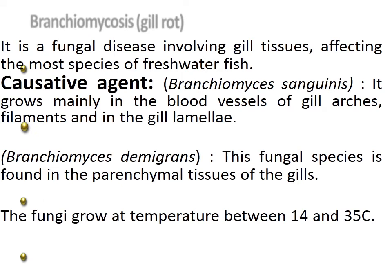Branchiomycosis, also known as gill rot, is a fungal disease involving gill tissues affecting most species of freshwater fish. The causative agent is Branchiomyces sanguinis, which grows mainly in the blood vessels of gill arches, filaments, and gill lamellae. Branchiomyces demigrans is found in the parenchymal tissues of the gills. The fungi grow at temperatures between 14 to 35 degrees Celsius.